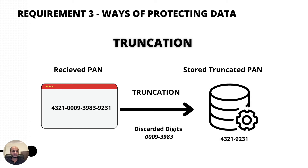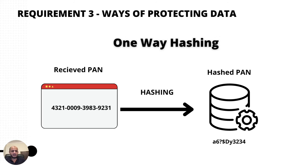The second method is truncation. You can also truncate data when storing it. Truncation is similar to masking, but instead of replacing digits with Xs you simply discard those digits permanently from storage. It makes the card number unreadable by removing a segment of data. I've seen it most commonly used in databases and flat files — even if an attacker gets access, they can't do anything because those digits have been removed.